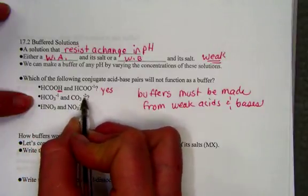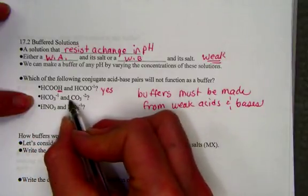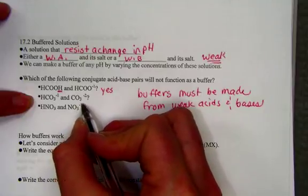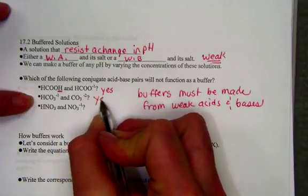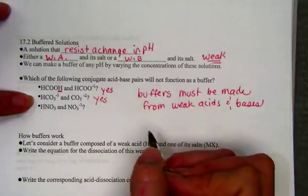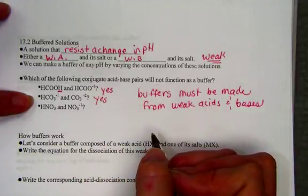Bicarbonate ion and carbonate ion are conjugate pairs. They differ by only one hydrogen ion. Neither is coming from a strong parent. So yes, that conjugate acid-base pair would function as a buffer.